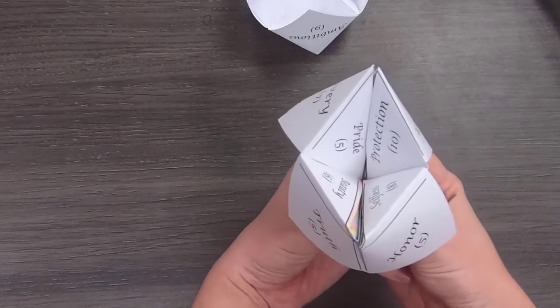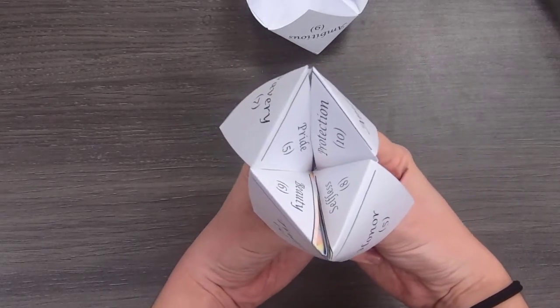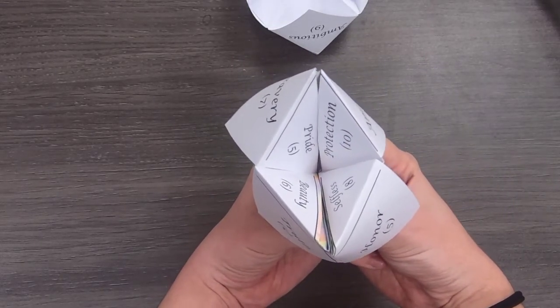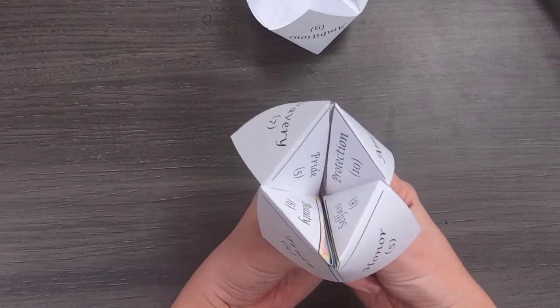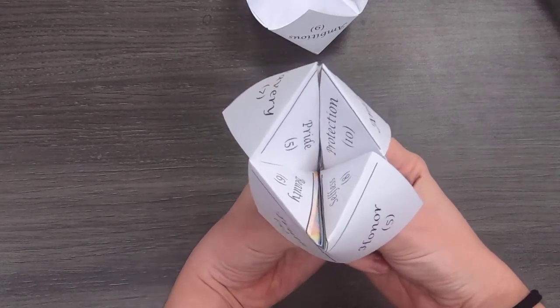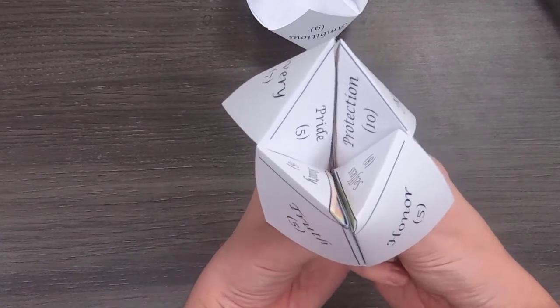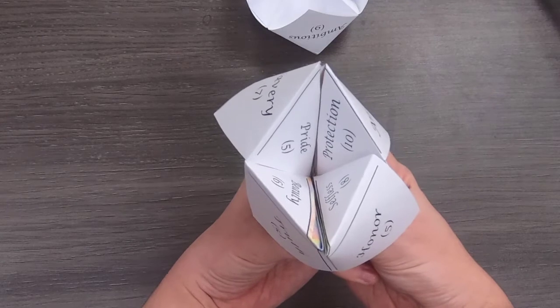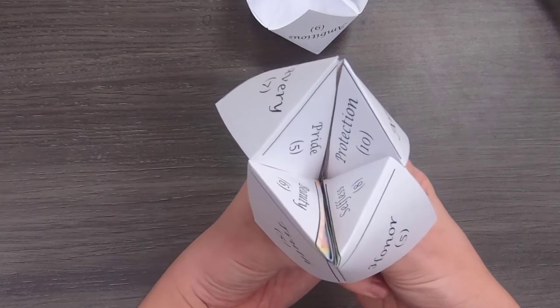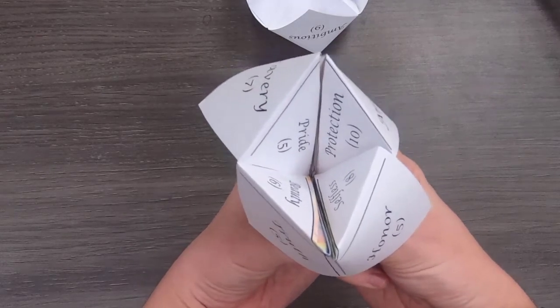All right. And from there, we are almost done. So from here, we have pride, protection, selfless, and beauty. Now, this is another thing. You pick which one you think applies to you most or which one you admire the most. For me, I'm going to pick selfless.